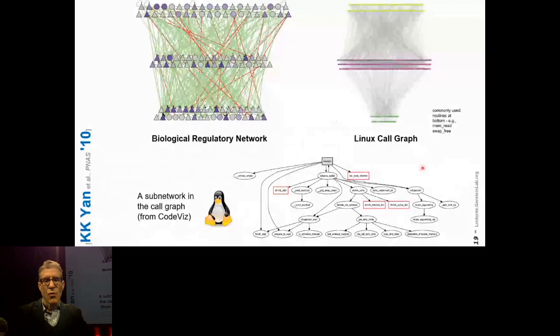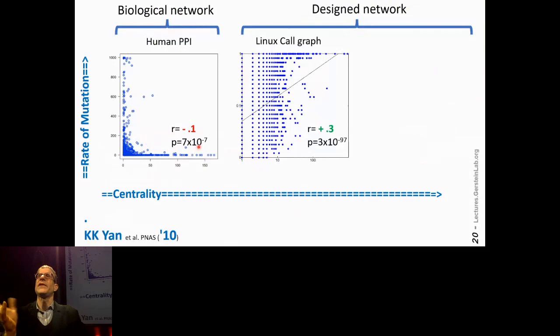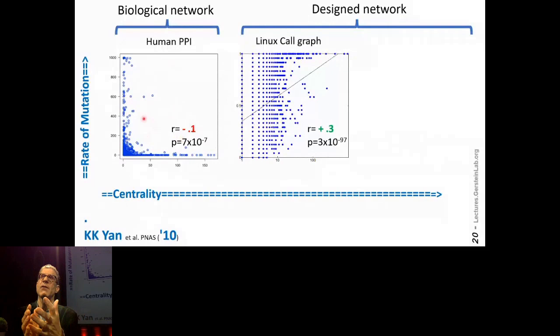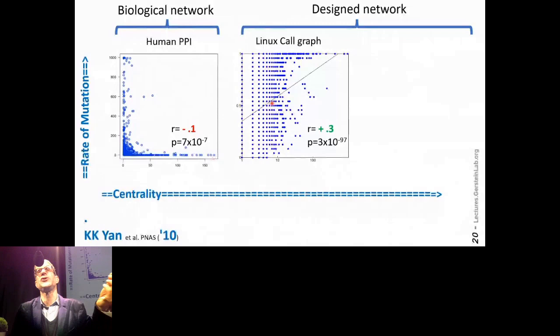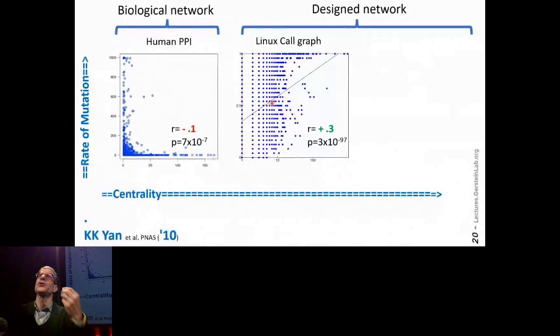We also found something really neat: looking at connectivity related to constraint. In the human network, there's an inverse relationship — the more central you are in the network, the more constrained you are, the fewer mutations you have. What we found which was really bizarre was that in the man-made Linux network, it was the opposite: the more connected you were in the call graph structure, the more mutations and changes you had. You can look at the number of changes in each subroutine across Linux's whole evolutionary history and tabulate them just like SNP density.